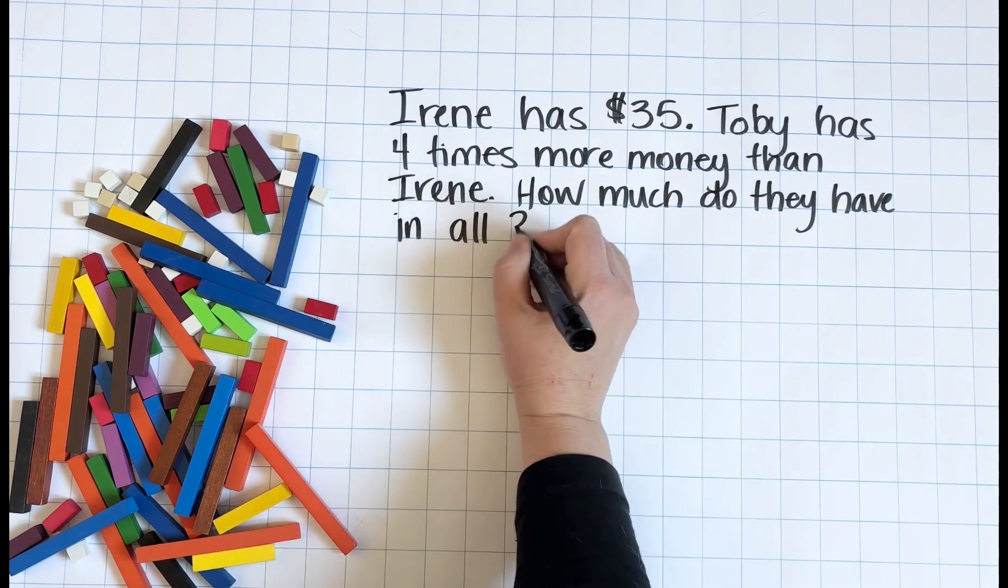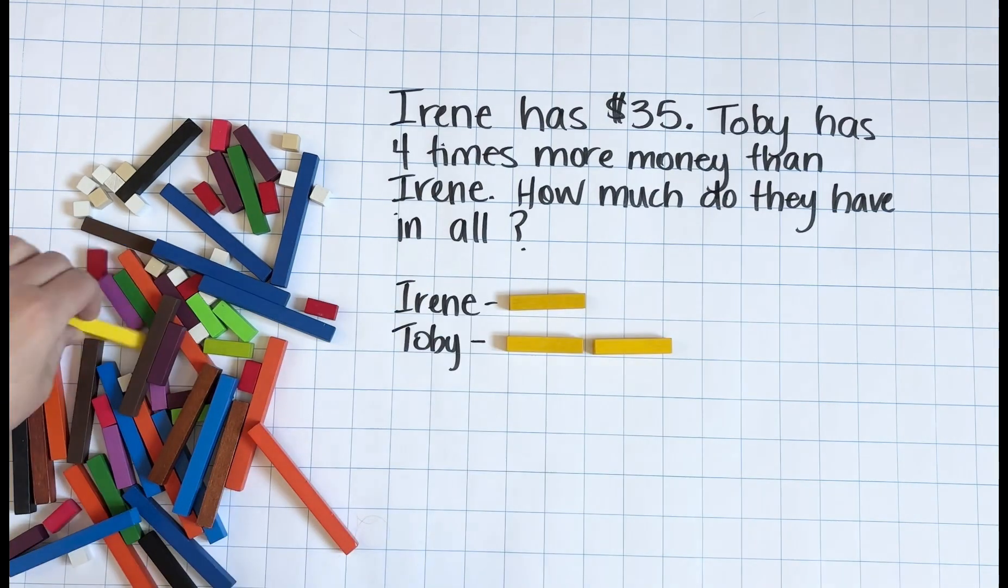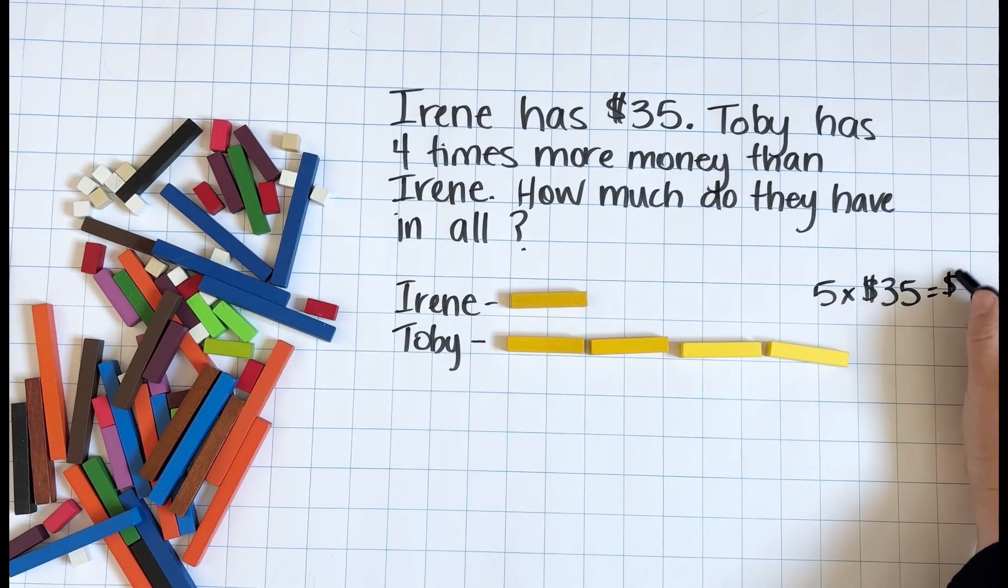So here's our first problem. Let's first look at how we could use Quisinaire rods as a manipulative to represent each group of $35. This makes it easy to see that we have five groups of 35.